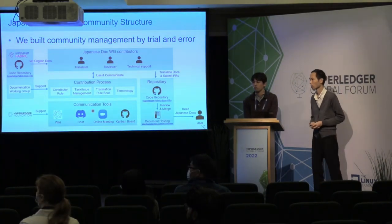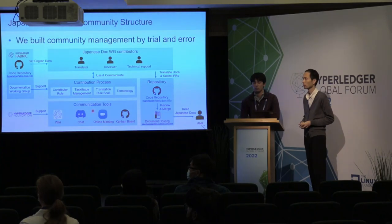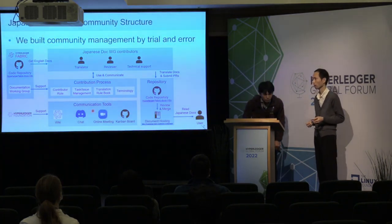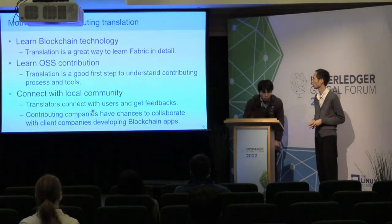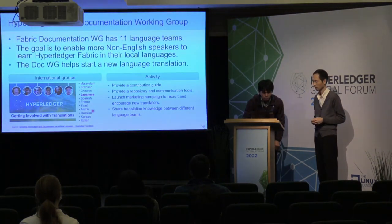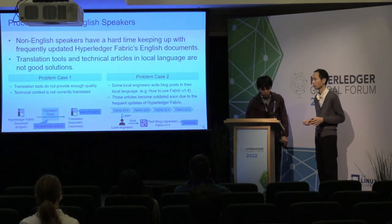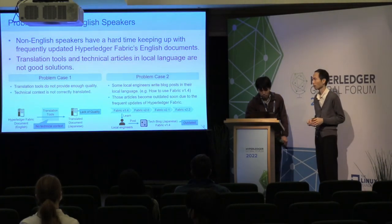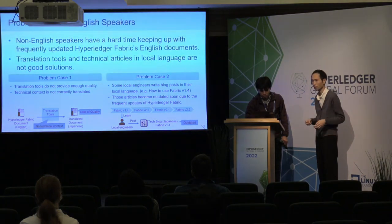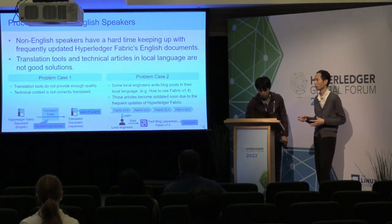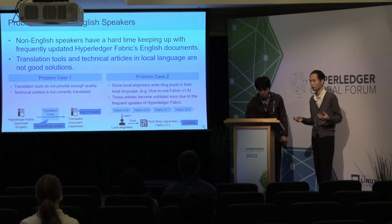Q: Have you tried other translation tools like DeepL? A: Yes, we tried both Google Translate and DeepL. They provide translations, but they cannot understand the technical context for blockchain or Hyperledger Fabric, so sometimes they produce strange translations. We need to translate by ourselves to provide good quality documentation for readers.